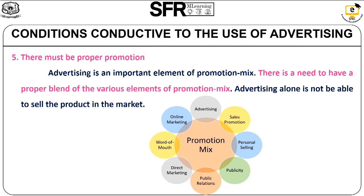The fifth condition is there must be proper promotion. Advertising is an important element of the promotion mix. Though there are many advertising methods, the manufacturer has to follow different promotion mix elements like direct selling, personal selling, publicity, and word of mouth. Nowadays, online marketing is one of the developing concepts.